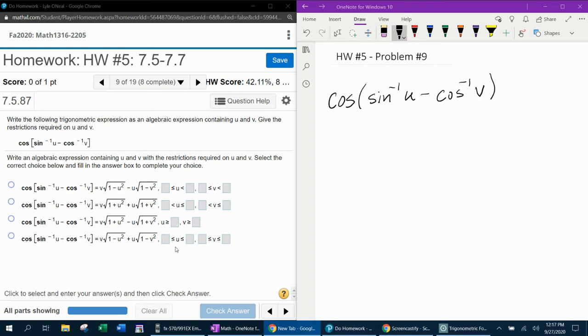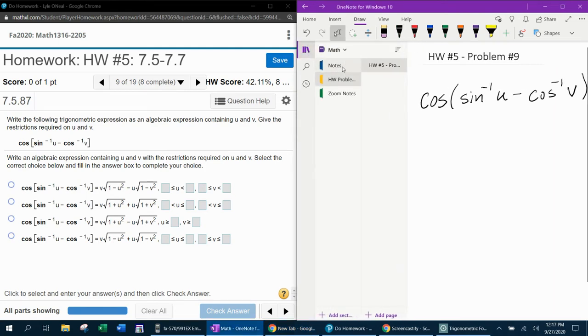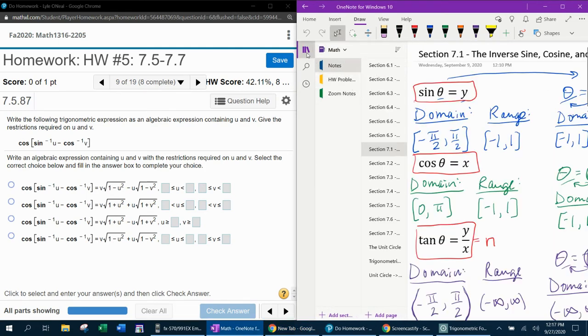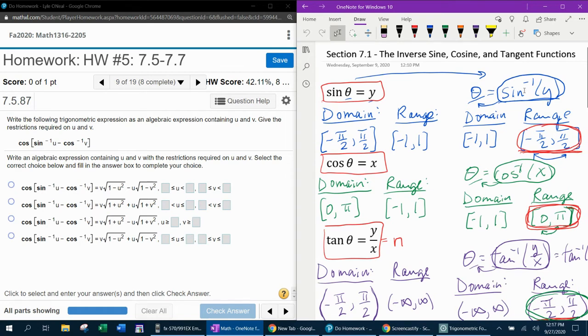I can see that the last answer choice is the only answer choice that has the correct restrictions on U and V, because I know that these are based on the inverse sine and the inverse cosine. So let's go back real quick to a previous lesson where we said the inverse sine has a domain of negative one to one inclusive, and the inverse cosine also has a domain of negative one to one inclusive.